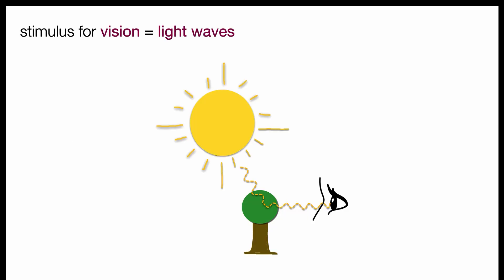For example, the stimulus for vision, or the visual images that we see, is light that has reflected off of the surface of an object. That light consists of photons or units of light that travel in waves, called light waves.